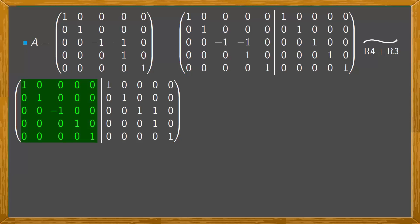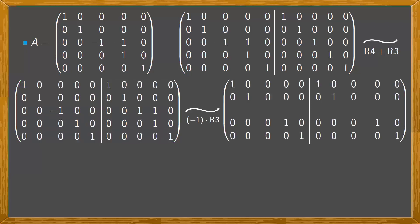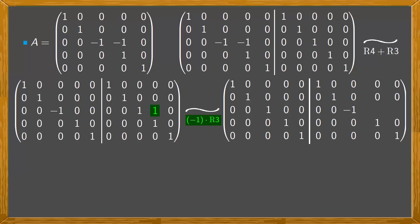Notice that in the first block we already have a diagonal matrix, and to obtain the identity matrix only the −1 in the third row remains. So now we multiply the third row by −1 and copy the rest of the rows. Multiplying: −1×0=0, −1×0=0, −1×(−1)=1, −1×0=0, −1×0=0, and for the second block: −1×0=0, −1×0=0, −1×1=−1, −1×1=−1, −1×0=0.